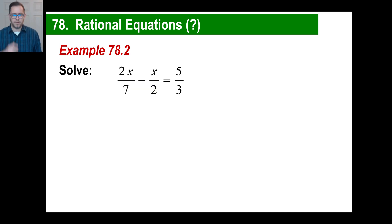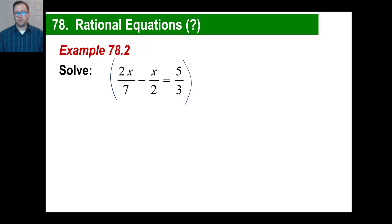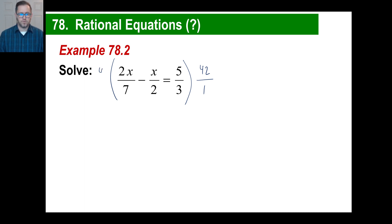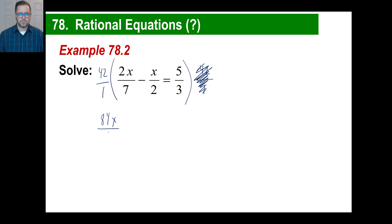Same process. The denominators are 7, 2, and 3. What do 7, 2, and 3 all go into? There really isn't a simpler option, so just multiply them together: 7 times 6 is 42. We'll place 42 over 1 in front. So 42 times 2x gives 84x, and 1 times 7 is 7 — done. We have a minus, so 42 times x is 42x, and 1 times 2 is 2.